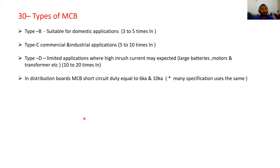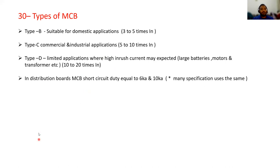Question 31: types of MCBs — Type B, Type C, and Type D. Type B is suitable for domestic appliances: 3 to 5 times the rated nominal current. Type C is for commercial or industrial applications: 5 to 10 times the rated nominal current. Type D is for limited applications where high inrush current is expected — large batteries, motors, transformers, etc.: 10 to 20 times the nominal current.